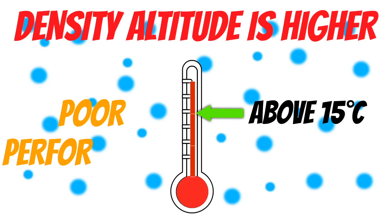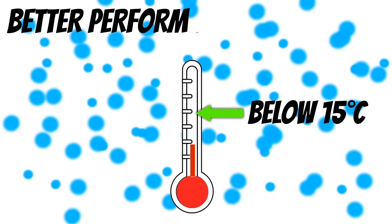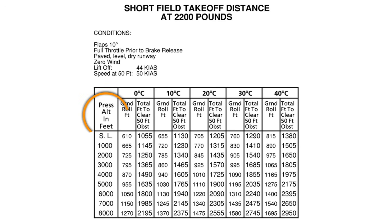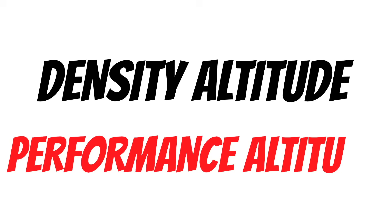Remember that scientist we talked about earlier? He also figured out that on average the temperature is around 15 degrees Celsius at sea level. This is important because it gives us a starting point to know how temperature affects the thickness of our air. If the temperature is above 15 degrees Celsius, the air molecules actually move further apart and that increases the density altitude. The pressure altitude didn't change, but the air is thinner, so the airplane isn't going to perform as well. If the temperature is lower, the air molecules move closer together and the airplane will perform better because the air is thicker, even though the pressure altitude might not have changed. A lot of times you won't see density altitude mentioned in the performance charts of the pilot's operating handbook, but the performance charts in the POH do take temperature into account along with pressure altitude. So they are using density altitude — you might just not see the name. This is why some pilots refer to density altitude as performance altitude.